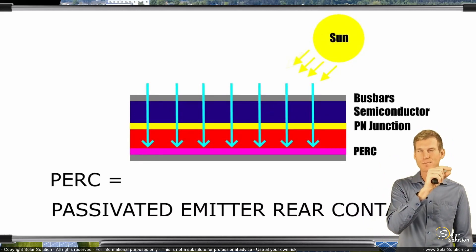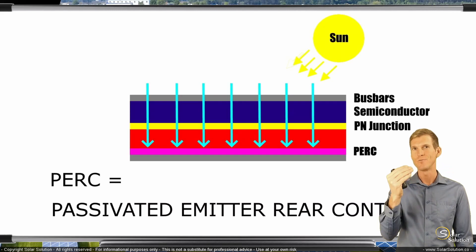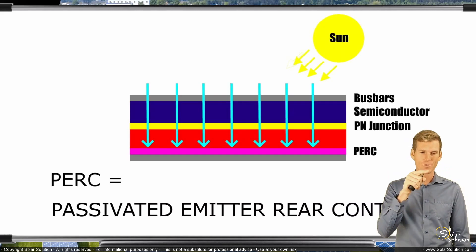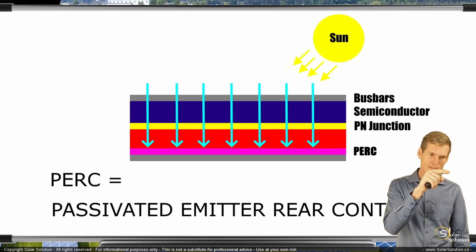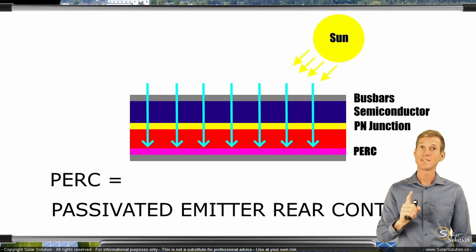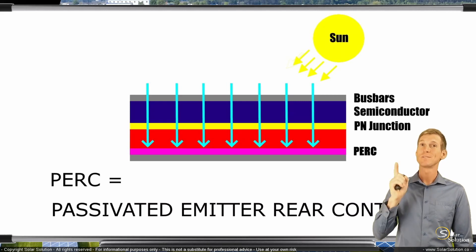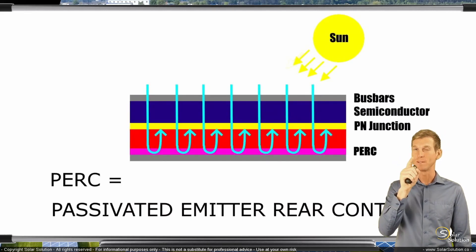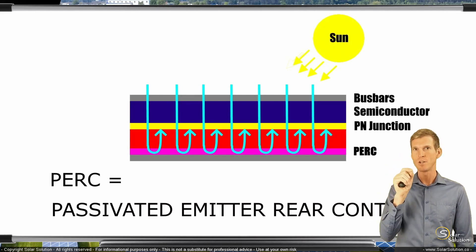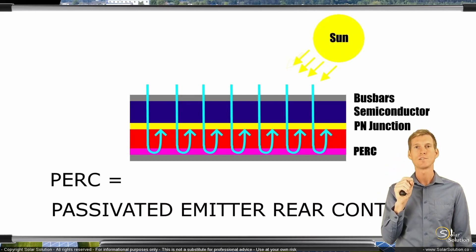By placing the PERC layer at the rear side of the solar cell, we're turning the solar rays around and sending them back towards the PN junction again. Remember, the magic happens at the PN junction — this is where you're creating electricity.